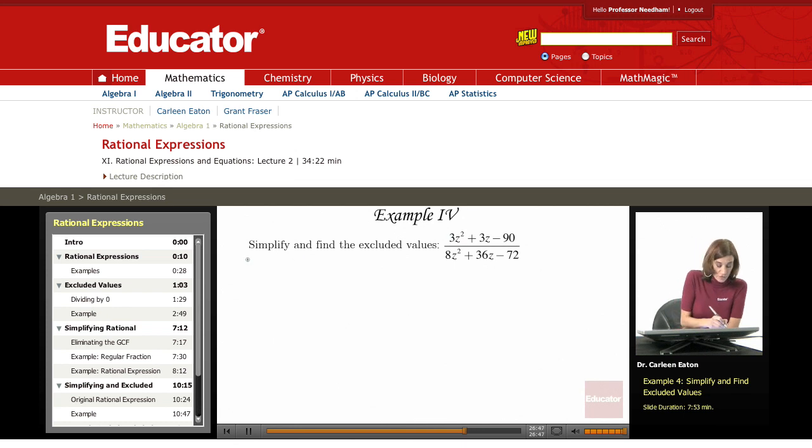So I do have a common factor of 3 in the numerator, which is going to leave me with z squared plus z minus 30. Denominator, same thing. I have a common factor of 4. So that's going to leave me with 2z squared plus 9z minus 18.